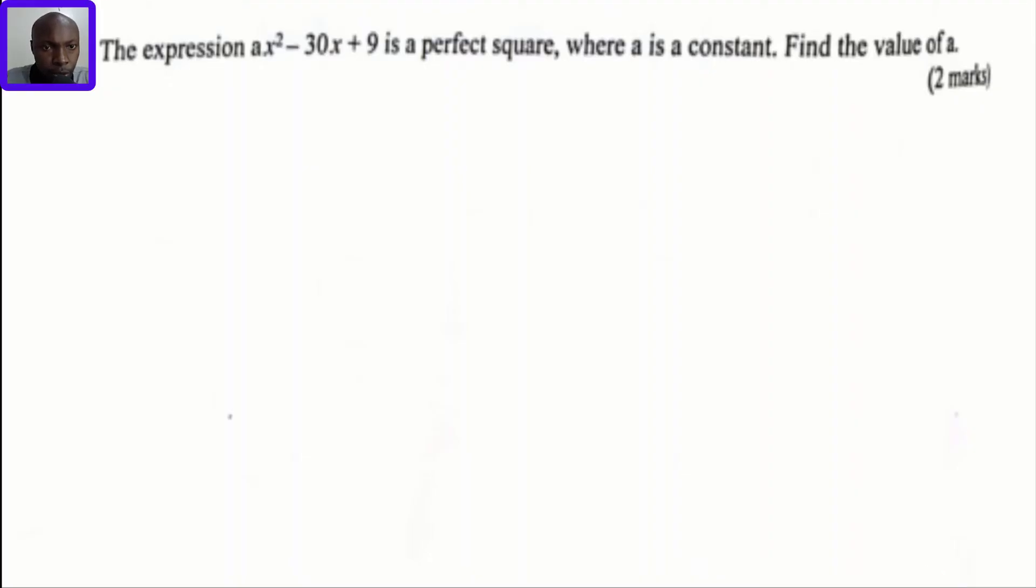Question number three: The expression ax² - 30x + 9 is a perfect square, where a is a constant. Find the value of a. There are two methods. The first method is to find a by using another expression which you're going to expand and then compare the different values.